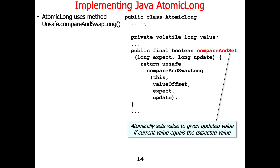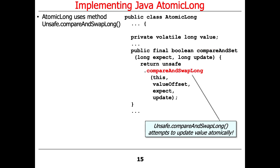There's also compareAndSet, which is a really important method for your implementation. compareAndSet is the Java wrapper around compareAndSwap — in this case compareAndSwapLong. You pass in the expected value as a long and the updated value as a long, and it calls compareAndSwapLong to do the work under the hood.